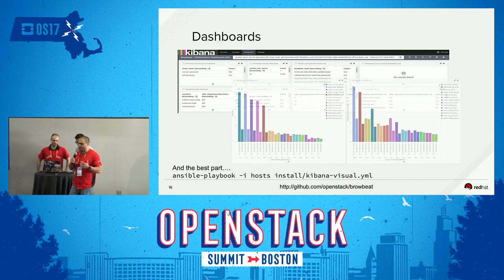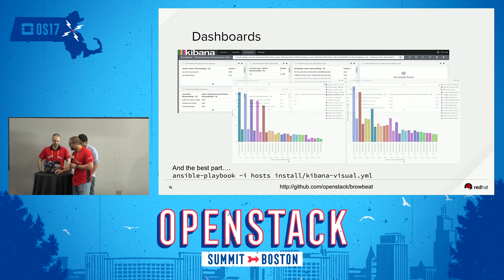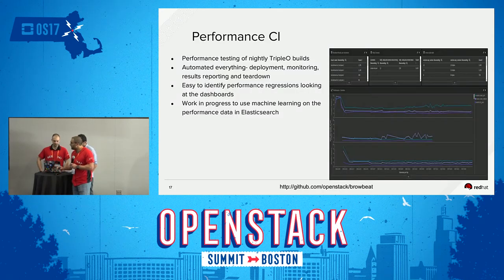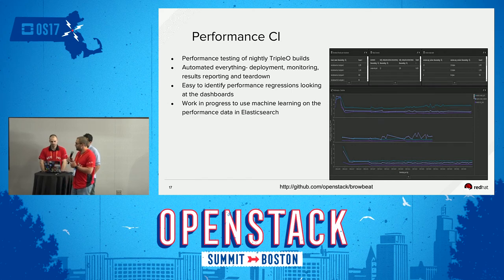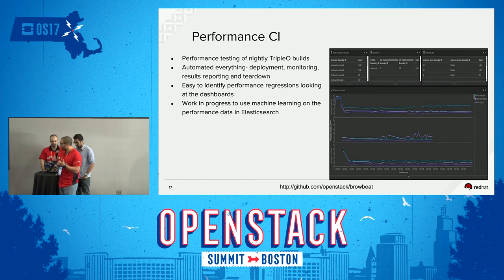If you're specifically looking at Neutron, you can filter on that. We have a performance CI that runs on the nightly Triple O builds and is publicly available. We'll add the link before we send the slides to the OpenStack organization.